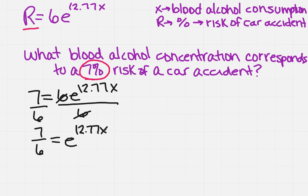Now how am I going to get rid of the e? Remember the opposite of e is natural log or ln. So I'm going to take the ln of both sides equals the ln of e to the 12.77x.